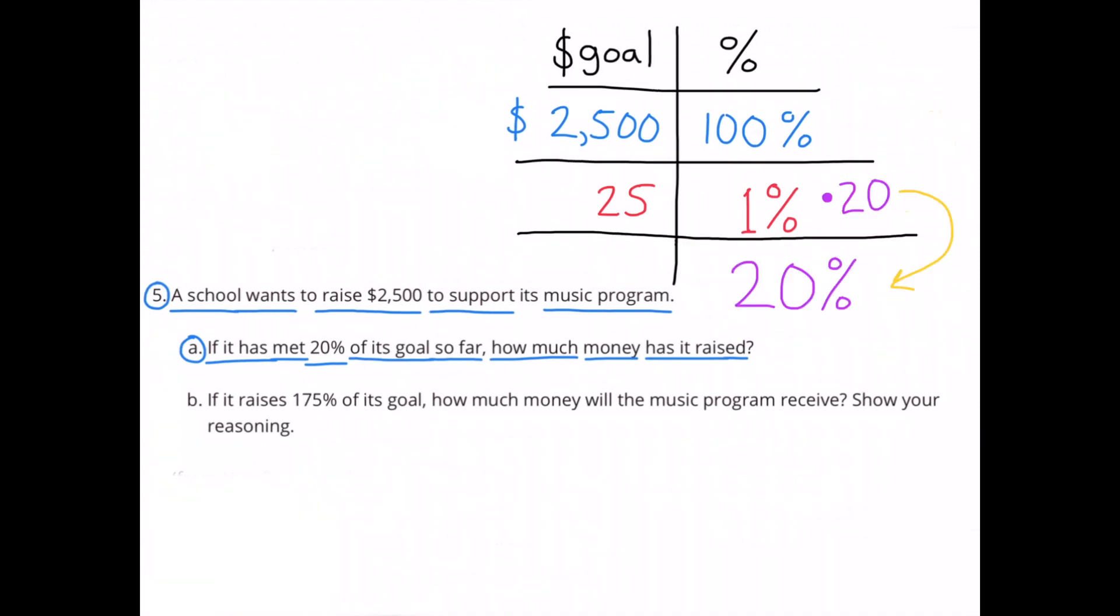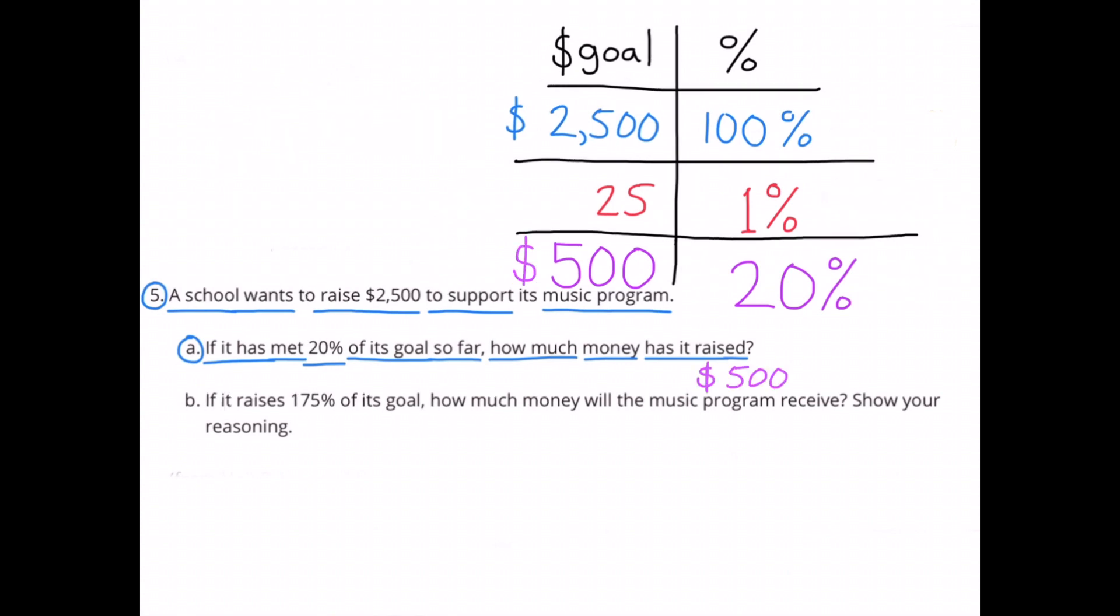If they met 20% of their goal, we could figure out the dollar amount now by multiplying 1% times 20. 1% times 20 equals 20%. Now we need to multiply 25 times 20. And 25 times 20 is 500. So 20% of the goal would be $500. If they met 20% of their goal so far, then they would have raised $500 so far.